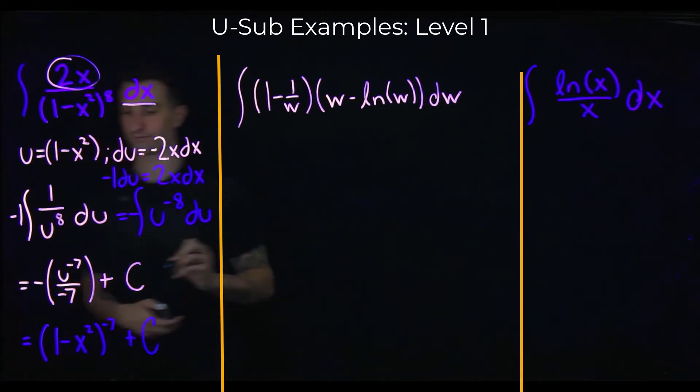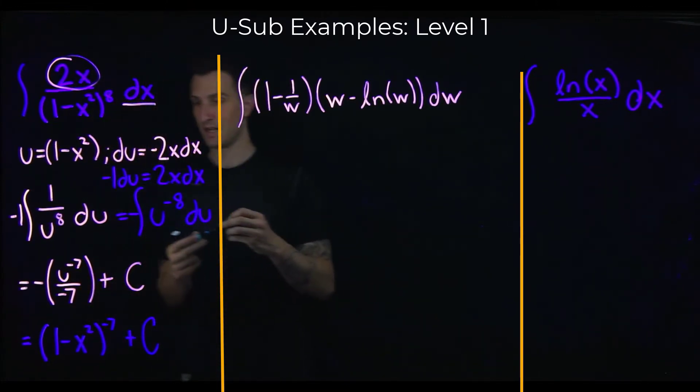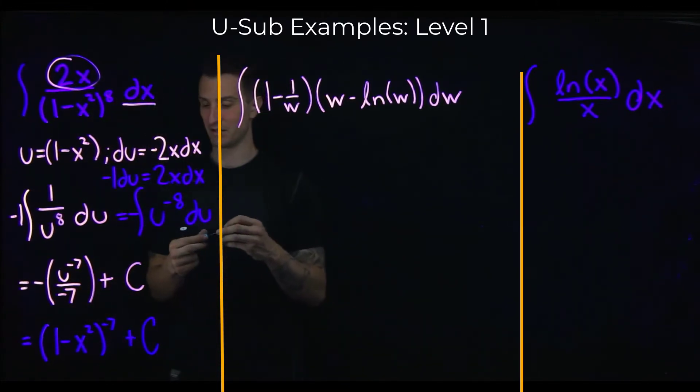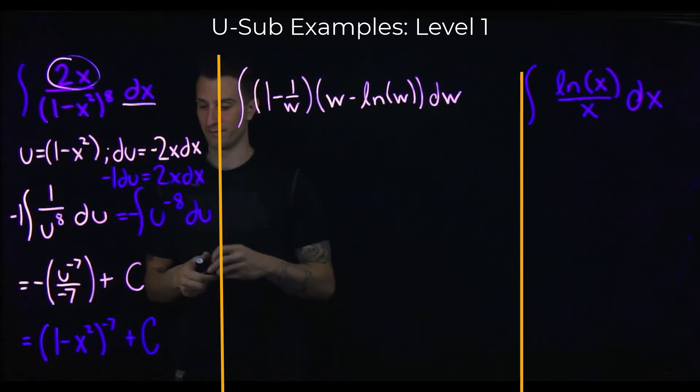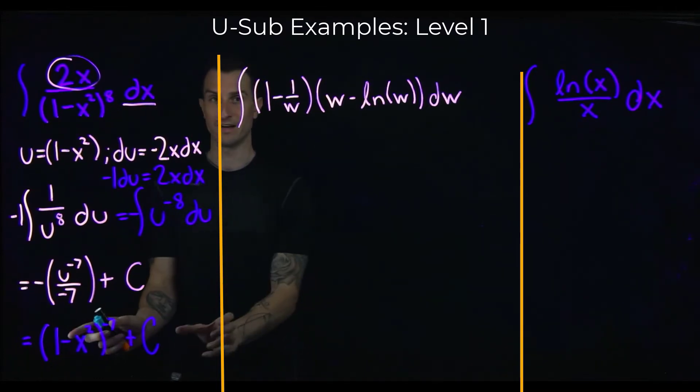Rewriting with a negative exponent: the integral of negative u to the negative 8 du. Adding 1 to the exponent gives negative 7, so we get negative times u to the negative 7 over negative 7 plus c. The two negatives cancel, and substituting back u = 1 minus x², our final answer is (1 - x²) to the negative 7th plus c.